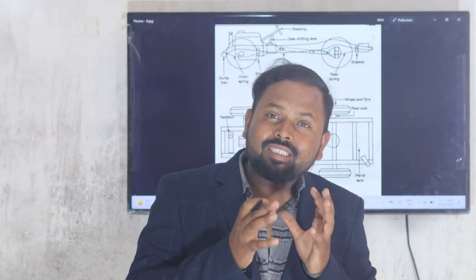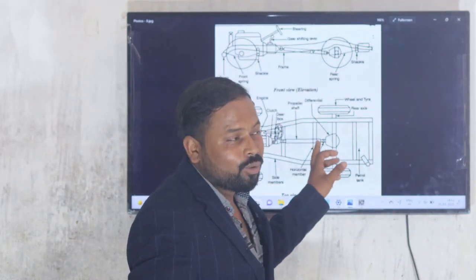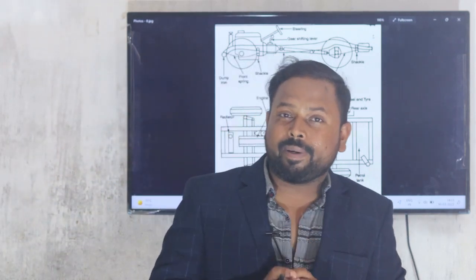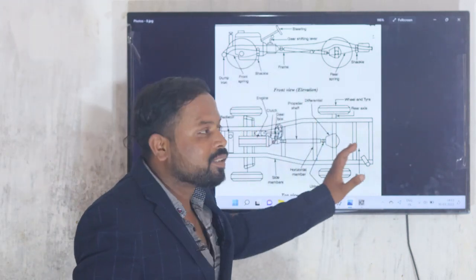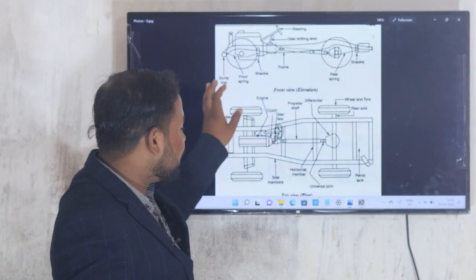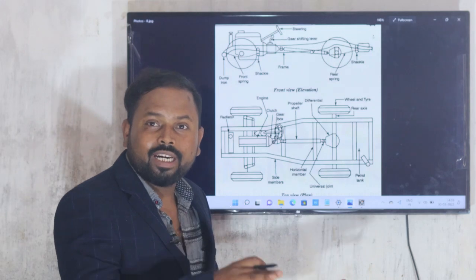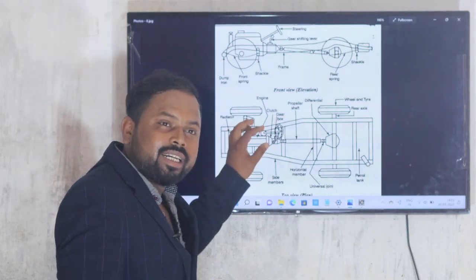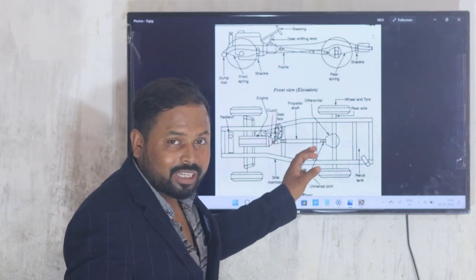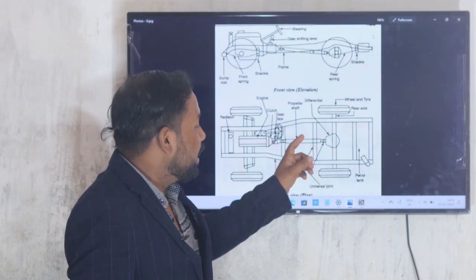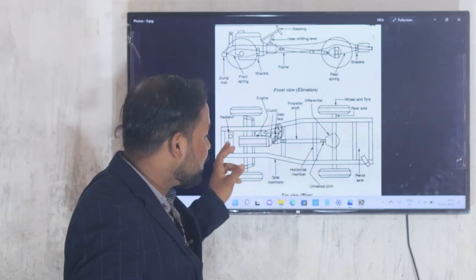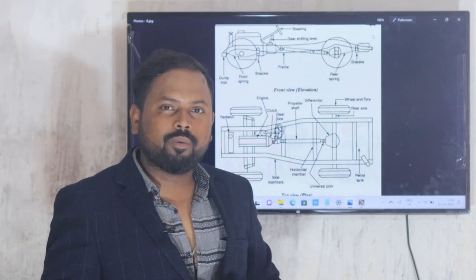This differential action occurs due to a non-planetary gear mechanism mounted inside the differential. So the total power transmission system works as follows: power is generated at the engine, transferred through the clutch to the gearbox, then through the universal joint to the propeller shaft, then to the differential, and finally from the differential to the rear axle and rear wheels. This is the complete power transmission system of the automobile.